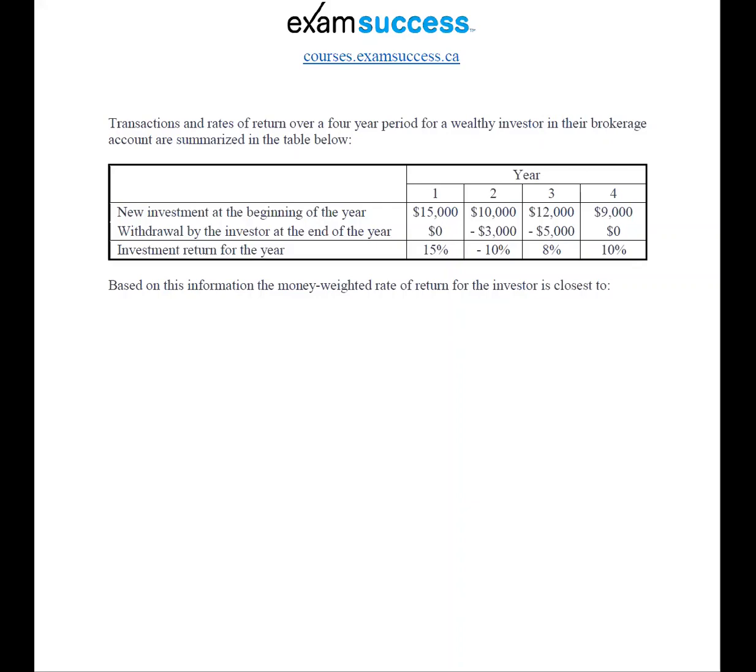This question I think you've got to be able to handle. This is calculating the money-weighted rate of return. There's a lot going on here in terms of this question, so let's break it down. They're giving us the transactions and rates of return over a four-year period for a wealthy investor in their brokerage account. We've got years one to four, new investments at the beginning of the year, withdrawals at the end of the year, and the investment returns for the year.